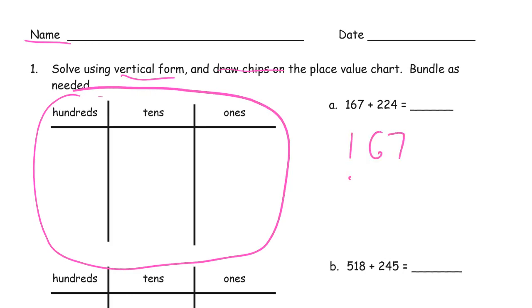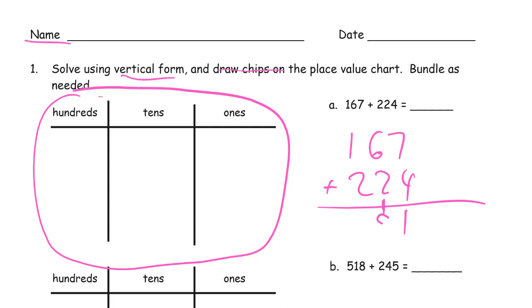167 plus 224. I'm going to do this vertically first. Always start with the ones digits. 7 plus 4 is 11. I have to compose a 10. Add it to the other tens. 6 plus 2 is 8, and that one more is 9 tens. And then our hundreds: 1 plus 2 is 3.